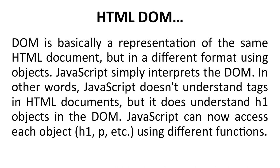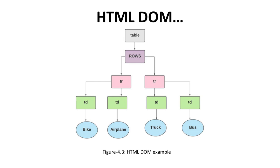JavaScript interprets the DOM — in other words, JavaScript does not understand tags in HTML documents, but it does understand objects like h1 in the DOM. JavaScript can access each object — h1, p, etc. (headings and paragraphs) — using different functions. For example, in an HTML DOM table structure, we have the table, then rows (tr — table rows), and then td — table data — which might contain data like bike, airplane, truck, and bus.